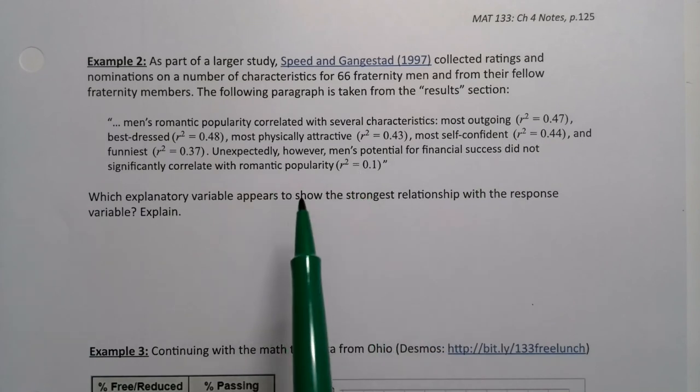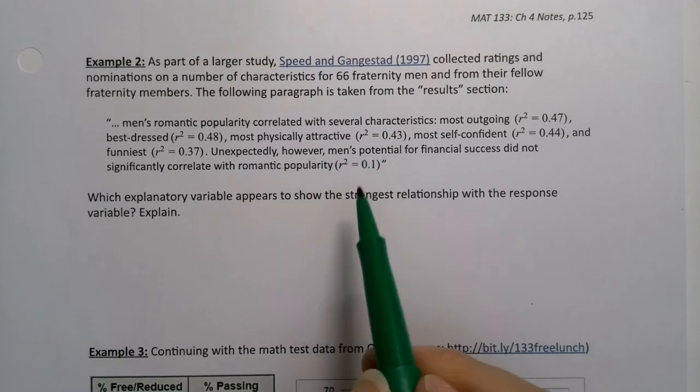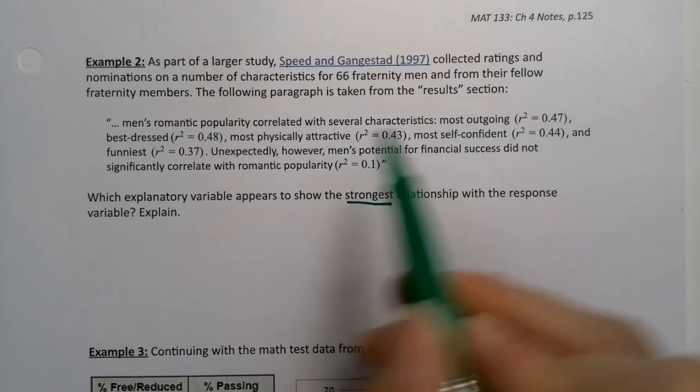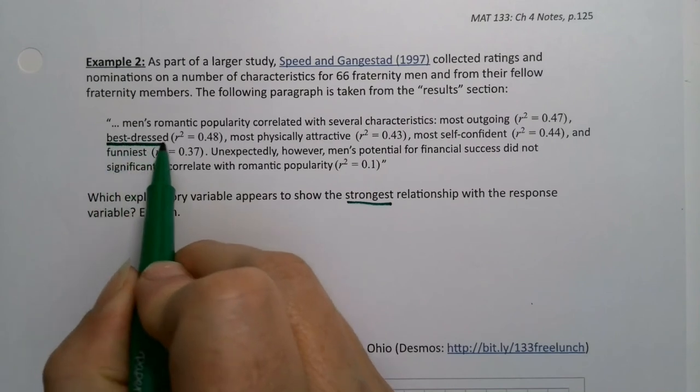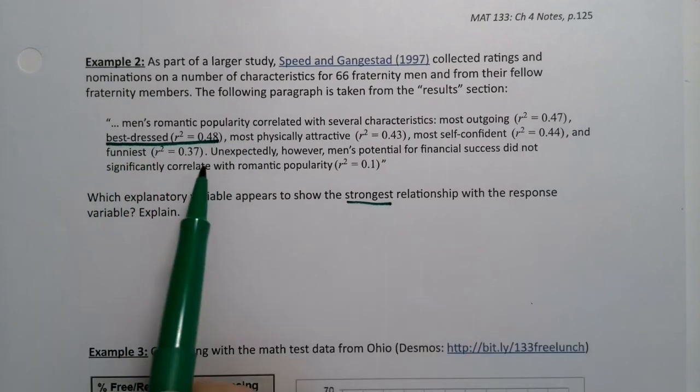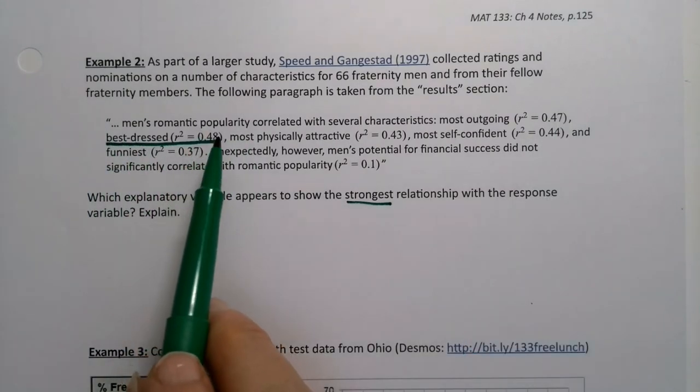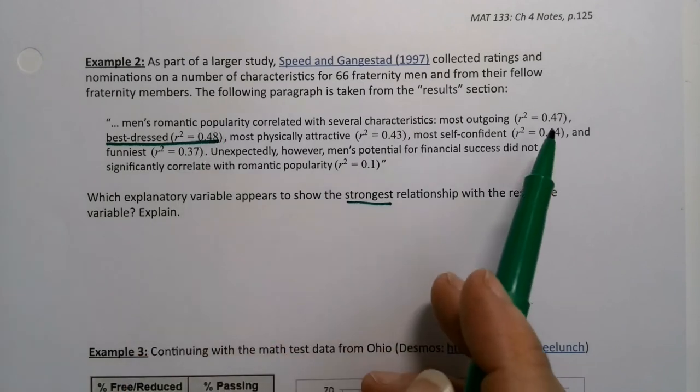Well, the strongest one would be most outgoing. Oh no, it would be best dressed. I looked the wrong way. Best dressed right there. Why? Because 48 is higher than 47.